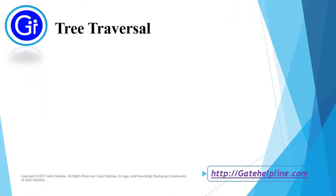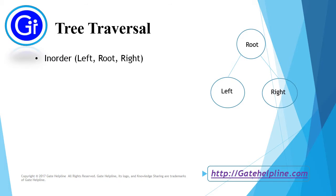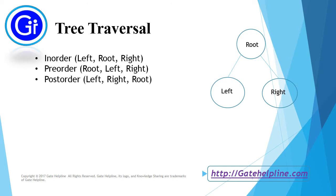Now we will see tree traversal. Tree traversal is of three types. First one is in-order: we first traverse the left subtree, then visit the root, and then traverse the right subtree. In pre-order, we first visit the root, then traverse the left subtree, and then traverse the right subtree. In post-order, we traverse first the left subtree, then the right subtree, and then visit the root.